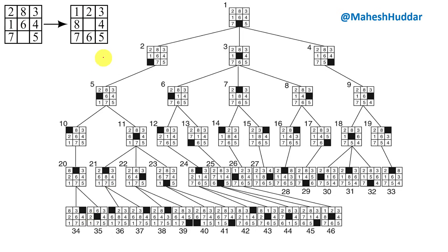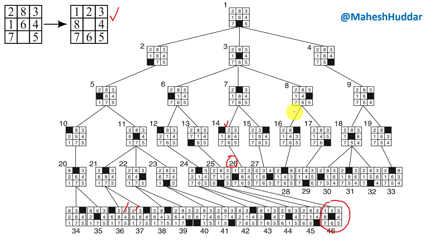Expanding state 20 gives states 34 and 35 — not goal states. We continue through states 21, 22, 23, 24, 25. When expanding state 26, the blank can move right, up, or bottom. Moving up returns the parent. Moving bottom gives one state. Moving right gives another state — and in that state we get 1, 2, 3, 4, 5, 6, 7, 8 with the blank exactly in the center. This matches the goal state exactly, so we stop here.